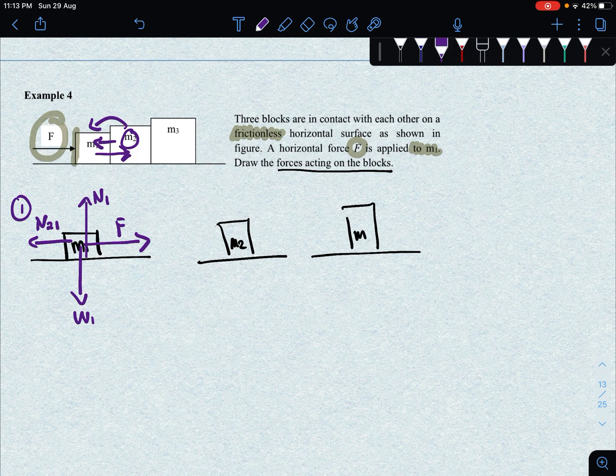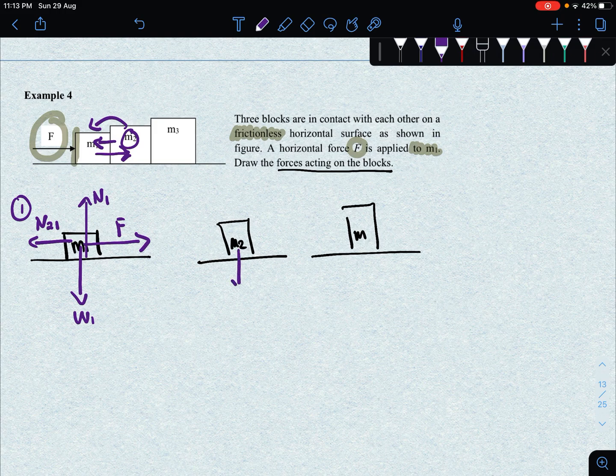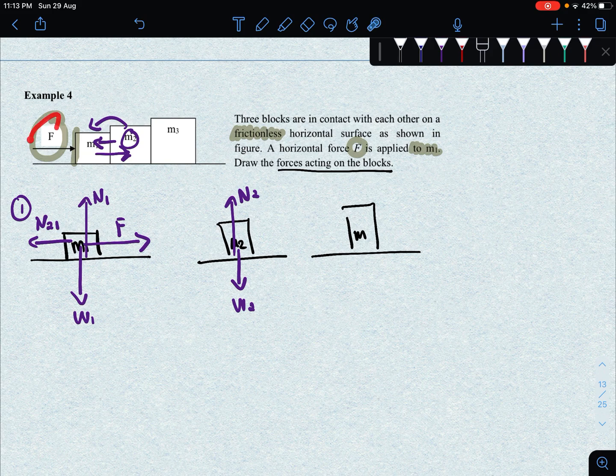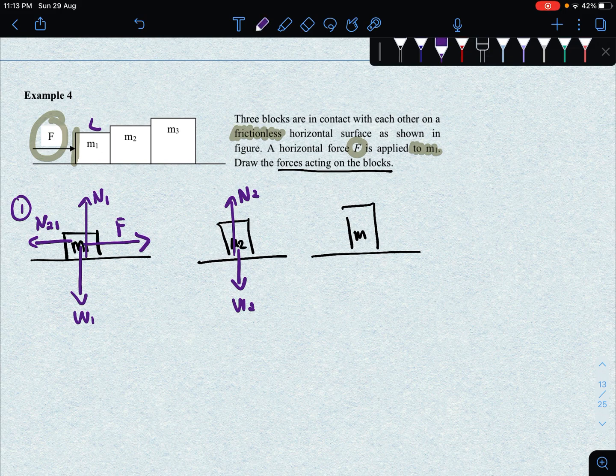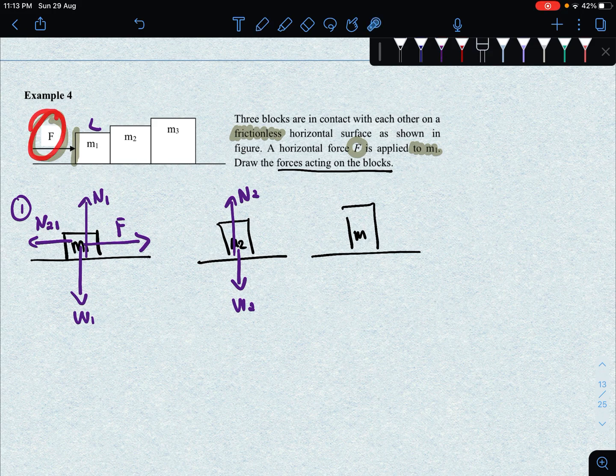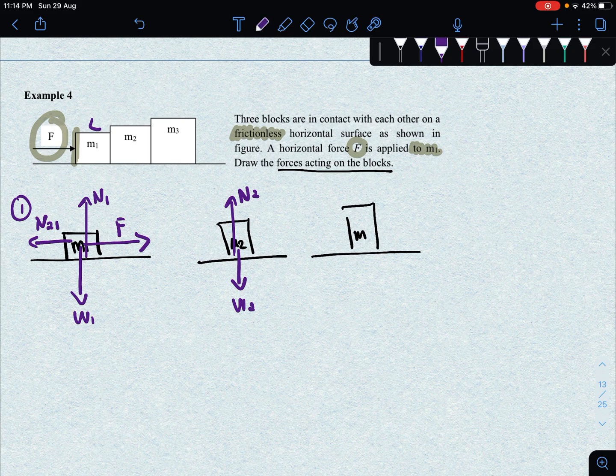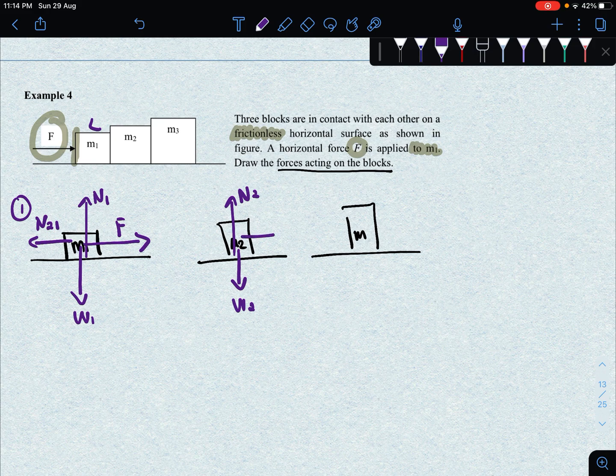Let us look at object 2. Object 2 will obviously have weight W2, and then normal force N2. If you look, this external force is not touching your M2 at all. So you don't have external force acting on M2. However, because of this external force, when pushed, object 1 will exert force on M2. Therefore, you will have that normal force due to the contact of M1 and M2, N1 on 2.